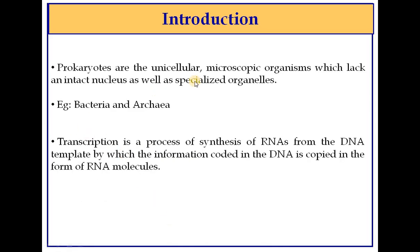As we all know, prokaryotes are unicellular microscopic organisms which lack an intact nucleus as well as specialized organelles. Prokaryotes are single-celled microscopic organisms with no intact nucleus or specialized organs. Examples include bacteria and archaea. Transcription is the process which forms RNA from DNA.